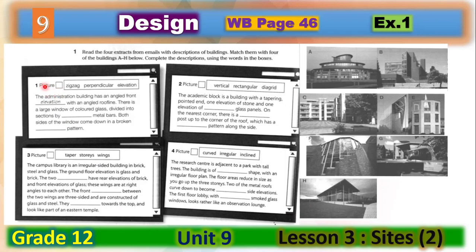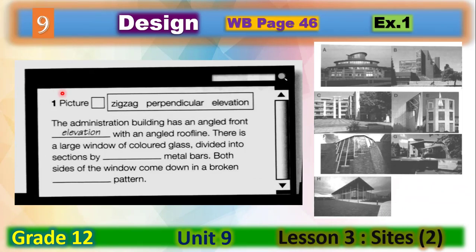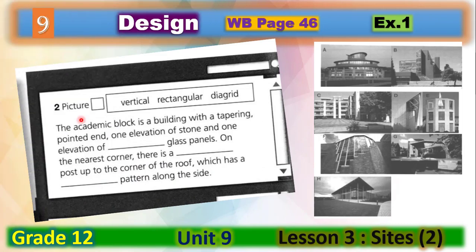Number one — it's picture F. The words are: perpendicular, zigzag. Number two: the words are vertical, rectangular, diagram. The academic block is a building with a tapered point in one elevation of stone and one elevation of rectangular glass panels. On the nearest corner there is a vertical post up to the corner of the roof, which has a pattern along the side — and it is picture D.